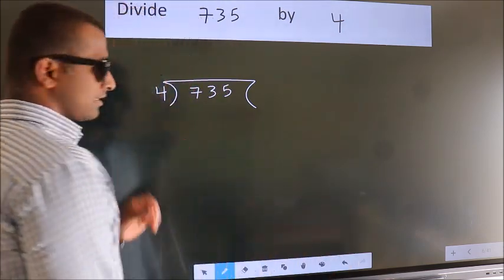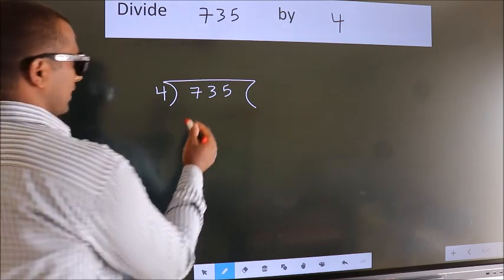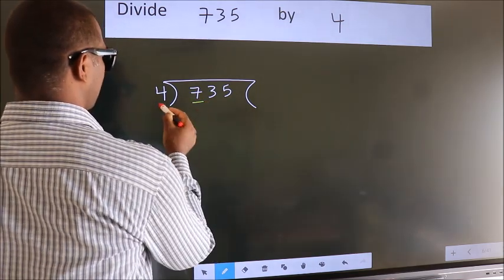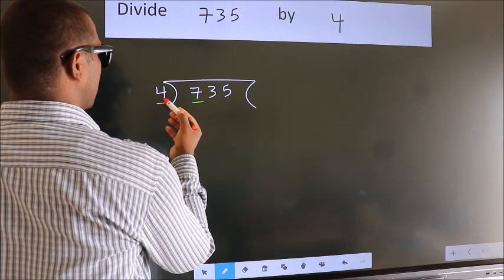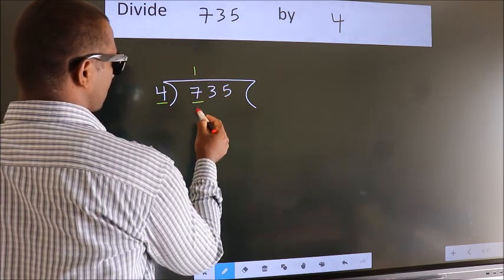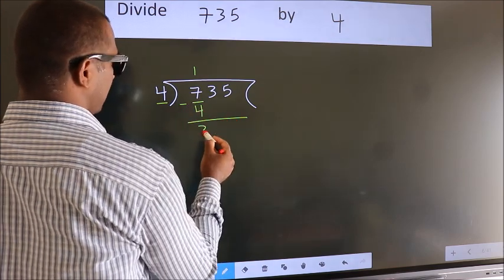This is your step 1. Next, here we have 7, here 4. A number close to 7 in 4 table is 4 once 4. Now, we should subtract. We get 3.